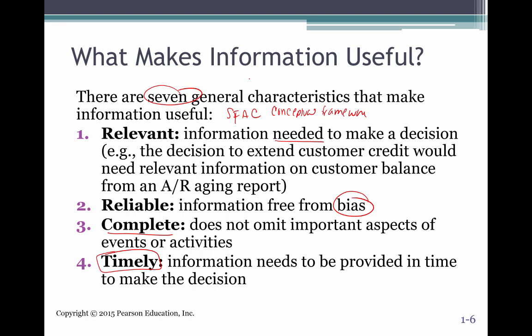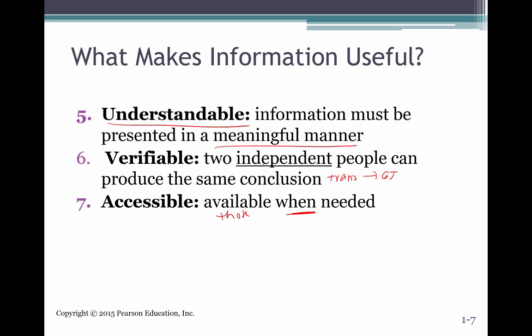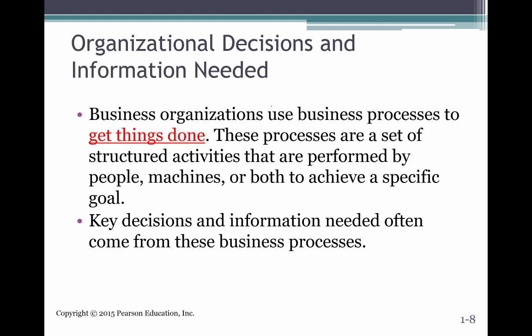So please keep in mind: relevant, reliable, complete, timely, understandable, verifiable, and accessible — the seven general characteristics that make information useful.